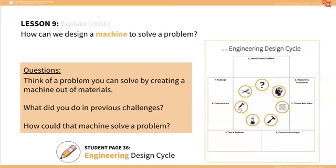Ask them, What did you do in that ramp challenge? How could that machine solve a problem? They might respond that it could be used to get objects close to a location, like getting your laundry closer to the laundry hamper, or to carry your book bag closer to the car.